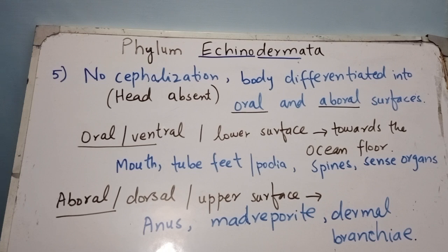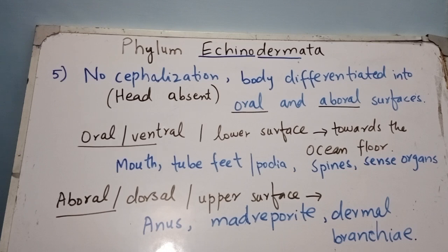There is no cephalization in echinoderms — the head is absent. The body is differentiated into two surfaces: oral and aboral. The oral surface is named due to the presence of the mouth opening. It is the lower (ventral) surface of the body, facing the ocean floor as the animal crawls or creeps.